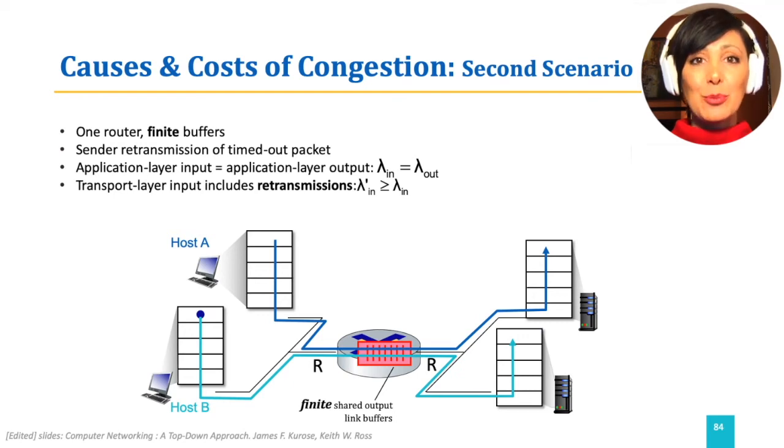Let's add some restrictions to bring our example closer to real-world conditions. Consider the same sender and receiver nodes, the same network, but this time assume the router with the shared output link has a finite buffer.